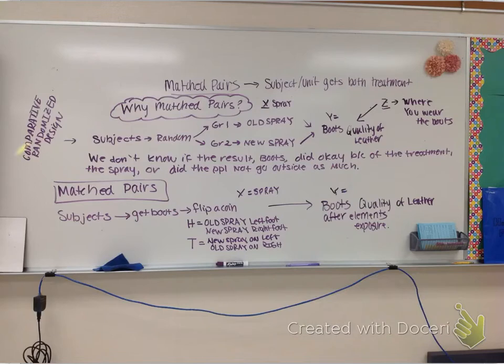I did this, and I showed a comparative randomized design with boots. And I said, I own a company. I own Uggs Boots Company. And I just came up with a new spray. And I want to compare, and I want to see the quality of the leather if the new spray is better than the old spray. And you can see that new spray here and the old spray there. And so, I have a bunch of subjects. They go to group 1. You can see in group 2, they get the old spray, new spray. And then I look at the quality of leather.